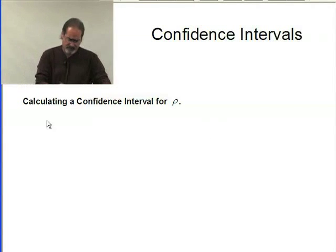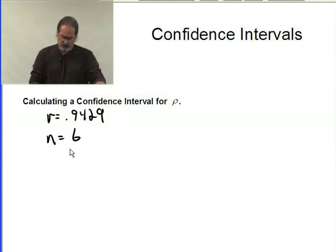Let's just suppose that our sample correlation is .9429 and n equals 6. So let's go ahead and do a 95% confidence interval.